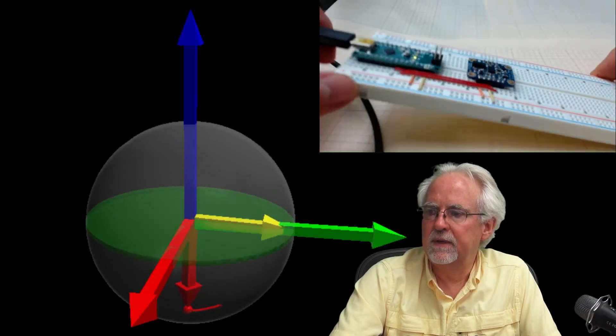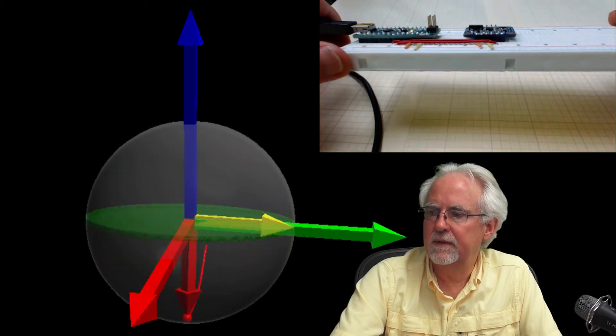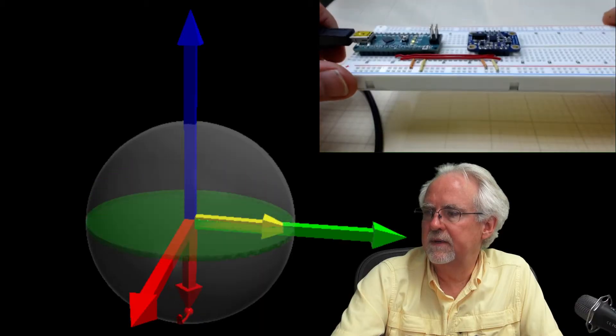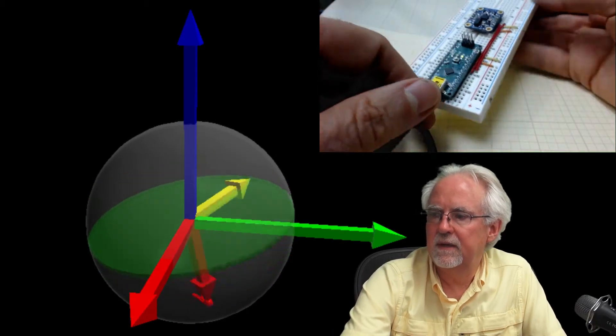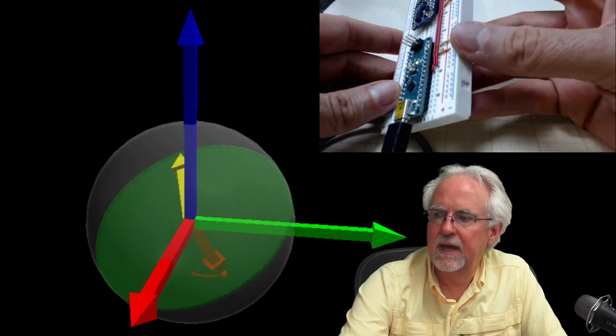Nose up. Nose down. Roll left. Ah, let's see. Roll left. Roll right. Airplane going away from us. Nose up. And bank left. Nose up. Bank right.